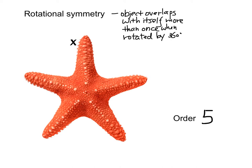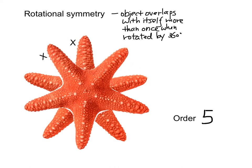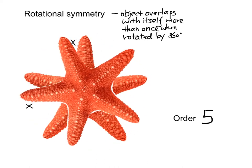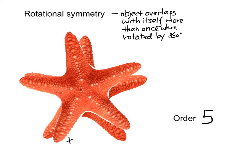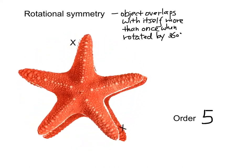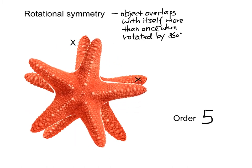Therefore, the order of rotational symmetry means the number of times that the object overlaps with itself when it is rotated by 360 degrees.